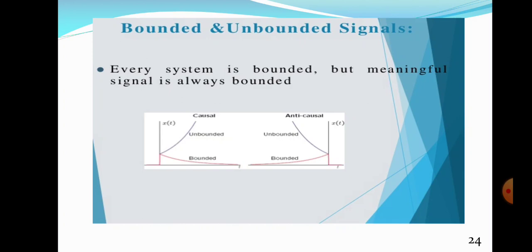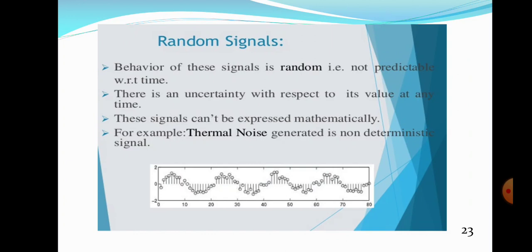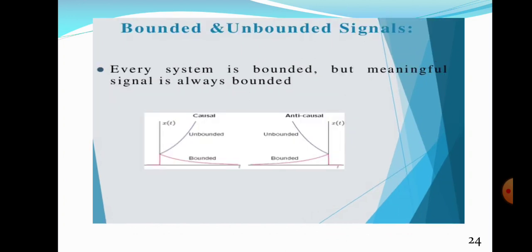To summarize: causal signal is a right-sided signal — x(t) equal to 0 when t less than 0. Non-causal signal is a left-sided signal — x(t) not equal to 0 when t less than 0. For deterministic signals, behavior can be predictable and expressed mathematically. For random or stochastic signals, behavior cannot be predicted and cannot be represented mathematically. For bounded signals, finite input gives finite output; otherwise it is an unbounded signal.